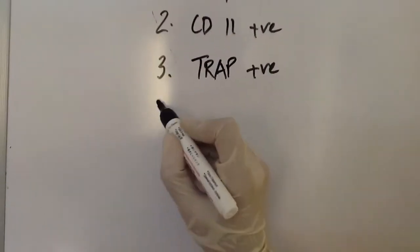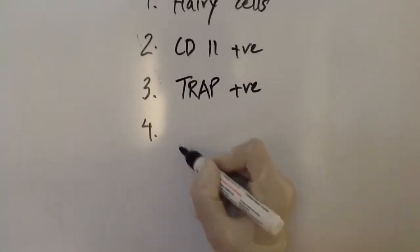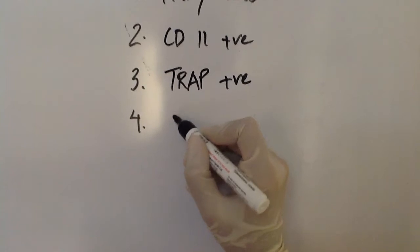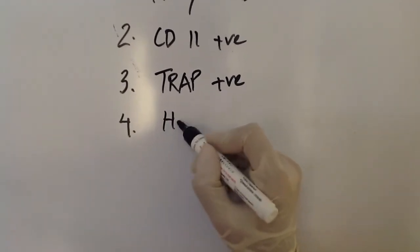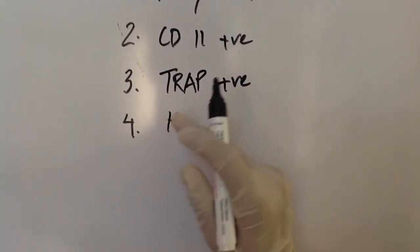Point number four: Hairy Cell Leukemia is also associated with hepatosplenomegaly.